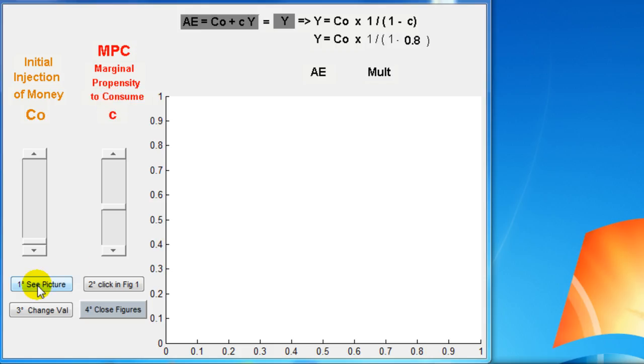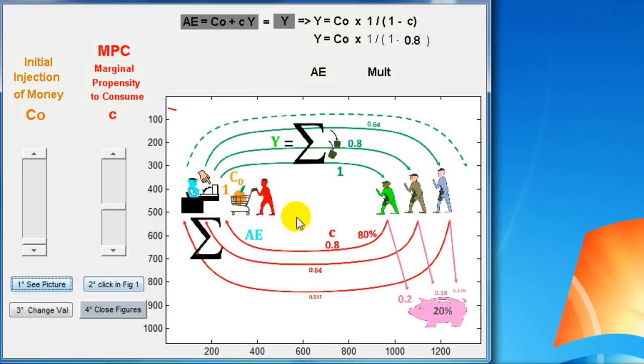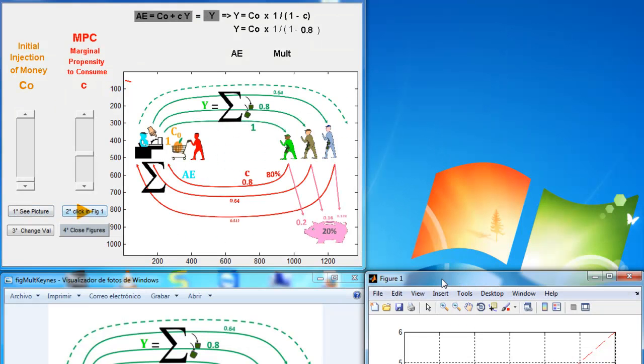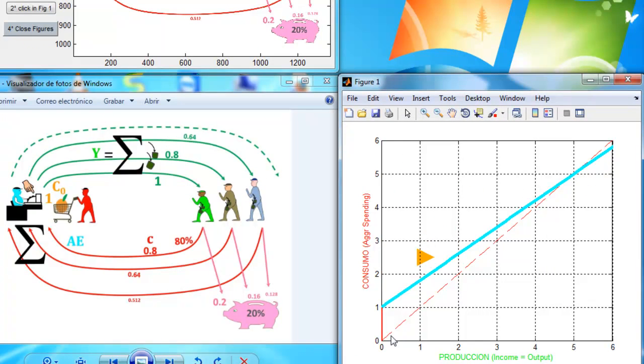We are going to see the picture here. We are going to start with an initial injection of $1, which is this initial consumption. Then, this $1 comes to the pocket of this green guy. So we represent it here. This is the income of $1.